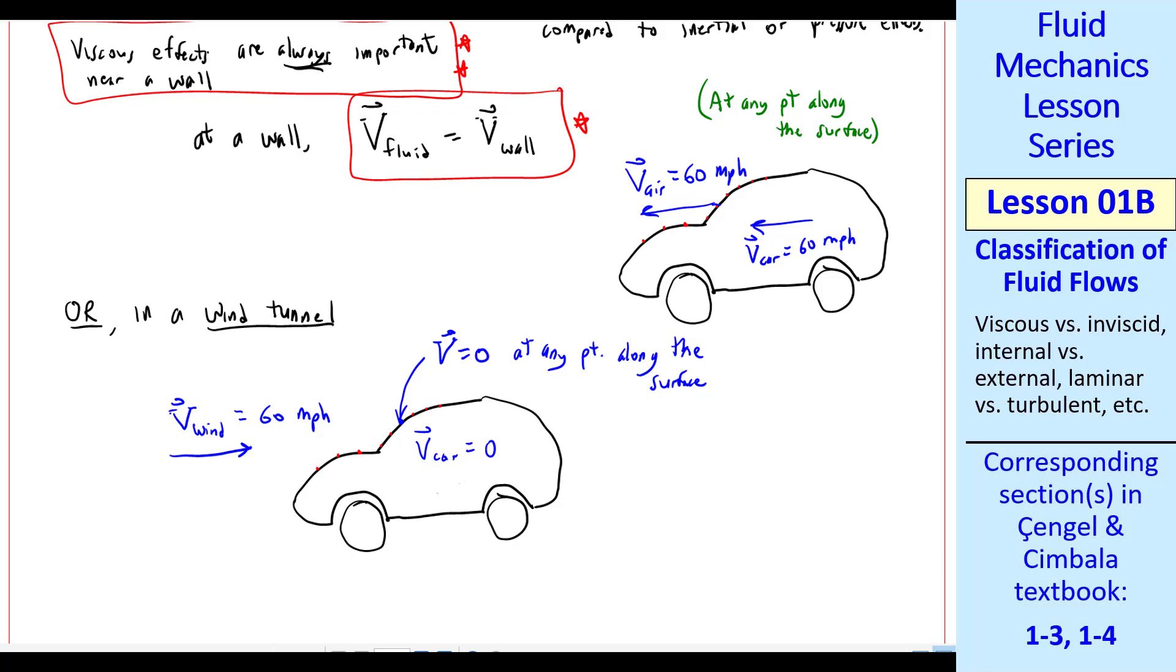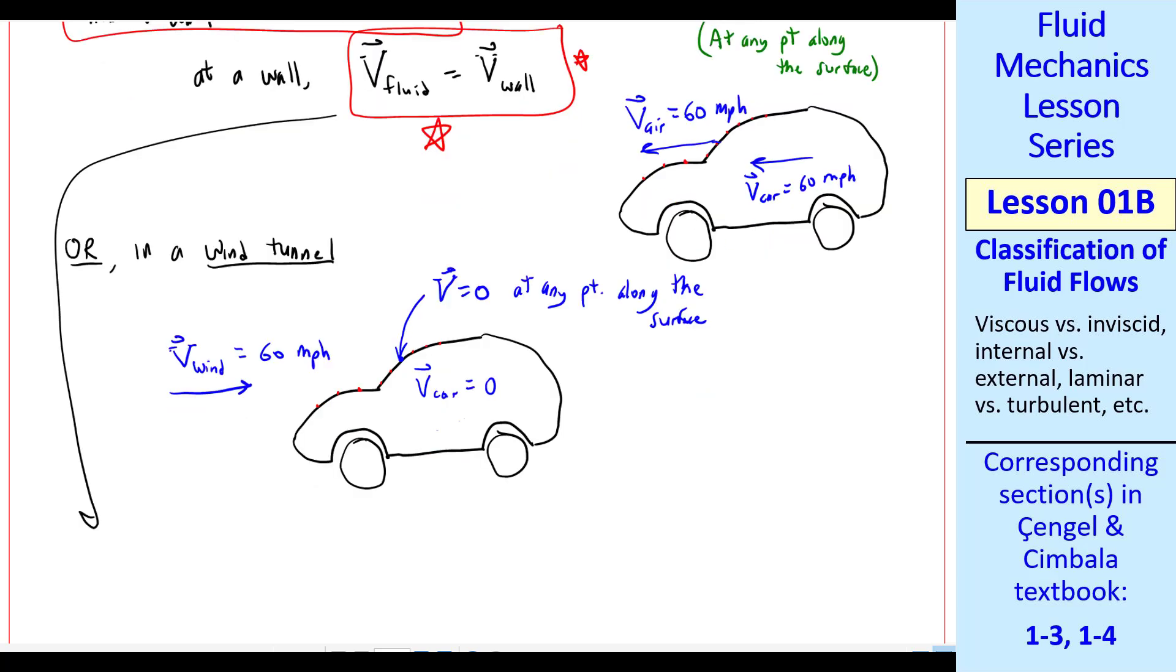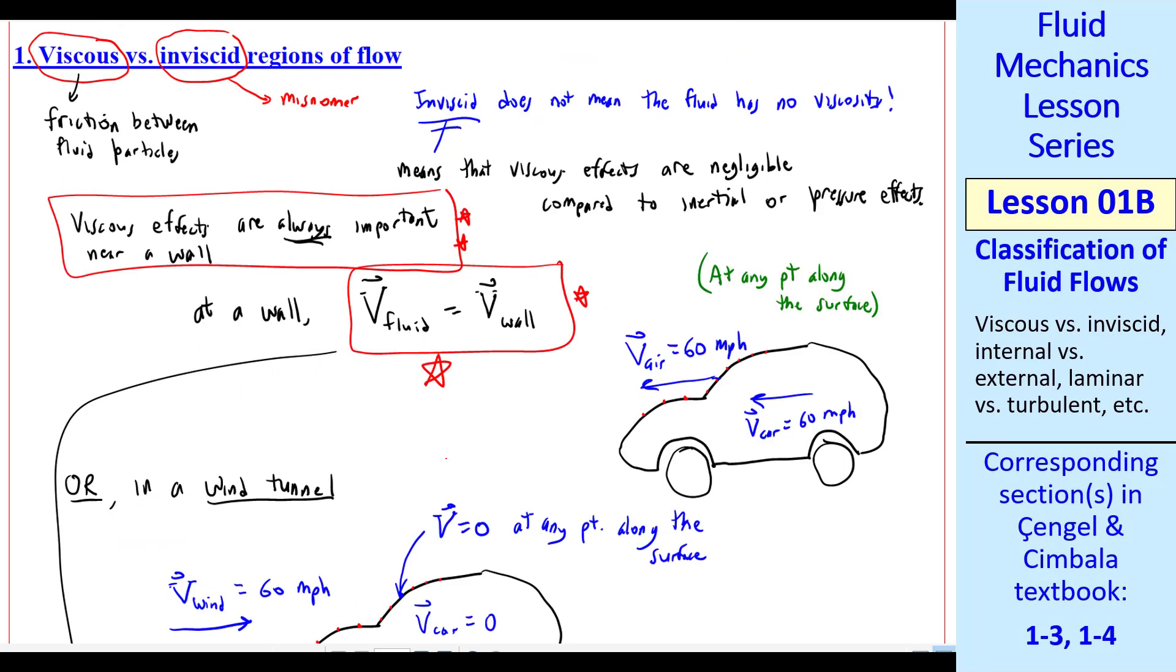This is a simple change of the frame of reference. We see that in either case, whether the car is moving relative to the air or the wind is moving relative to the car, the fluid has to have the same speed, same velocity, that means speed and direction, of the car itself. This equation that v_fluid has to equal v_wall, those are vectors, is called the no-slip condition, which means there can't be a slip of the air relative to the wall.